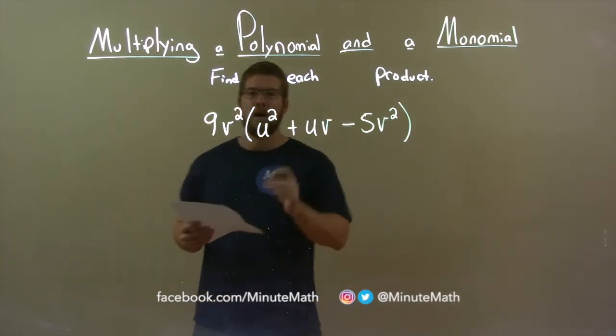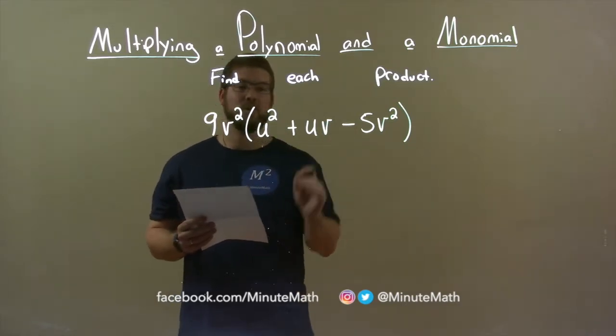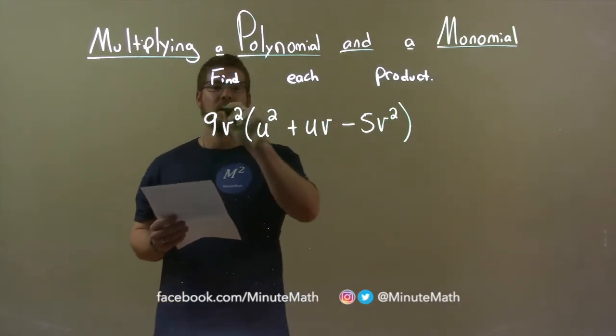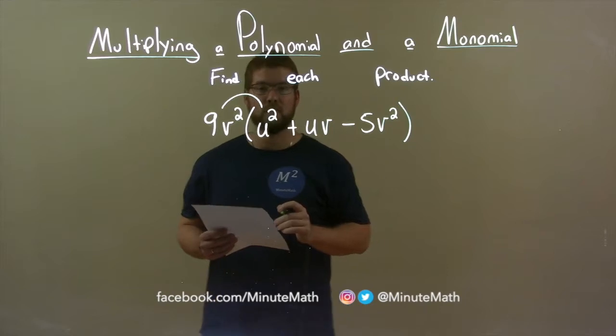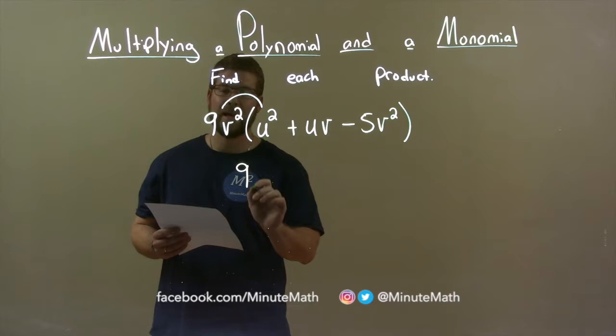Alright, I want to take the 9v squared and multiply it by all three terms in the parentheses. So, 9v squared times u squared. The coefficient in front of u squared is 1, 9 times 1, 9.